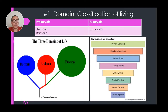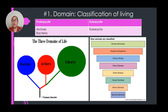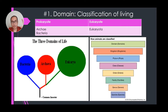Starting with number one: domain. Domain is a subject in taxonomy, which is the discipline of biology that helps to classify living things according to their genetic information, their similarities to other species, and so on. There are three main domains: eukarya, which belongs to eukaryotic cells, and the prokaryotic lines are bacteria and archaea.